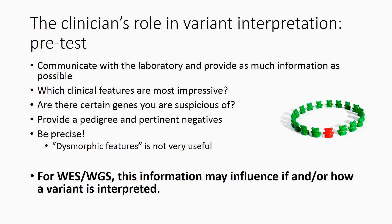The clinician has an important role in the clinical interpretation of genomic variants. One important way the clinician can contribute is to communicate effectively with the genetic testing lab and provide clinical details about a patient prior to testing. This can include sending clinic notes and pedigrees when requested, but also helping the lab understand nuances, such as which clinical features are most impressive. It can help to include genes or disorders that you are suspicious of, as well as pertinent negatives.